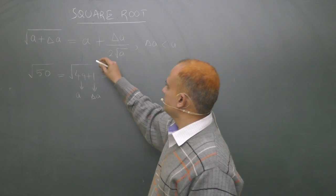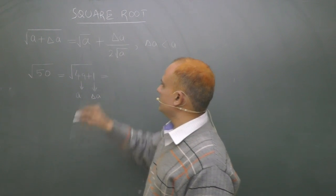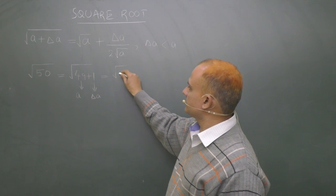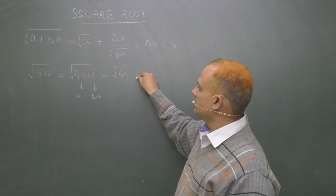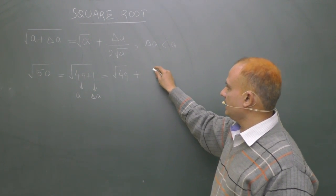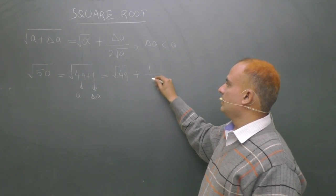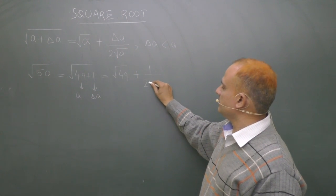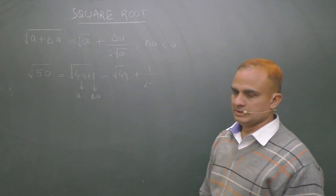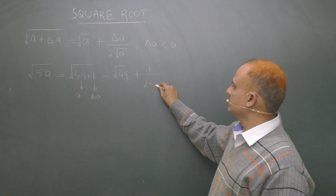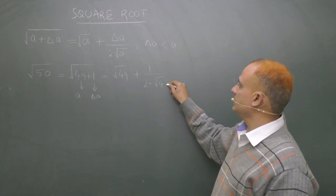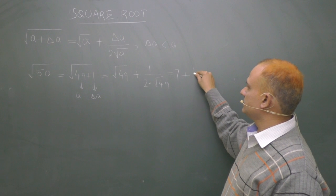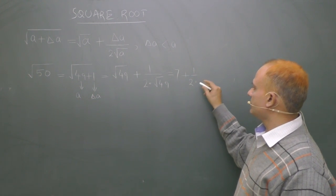Now the result says, sorry one square root should be there. So result is square root of a plus delta a. So instead of square root of a you write 49 plus delta a. Delta a is 1 upon 2 into, if there is no sign in between these two variables and constants it means there is a multiplication sign. So this dot indicates multiplication. Square root of 49 is known to you.